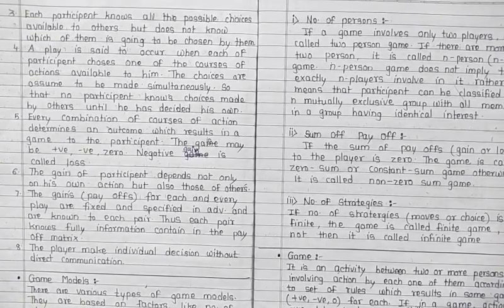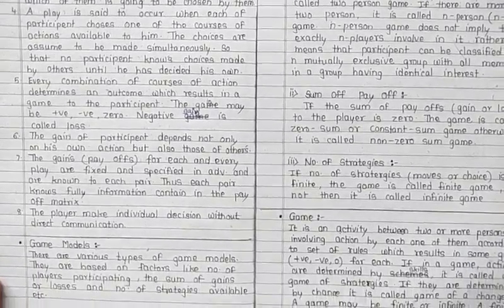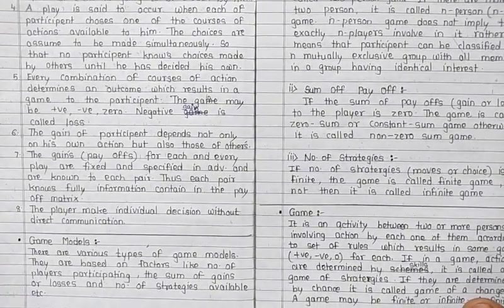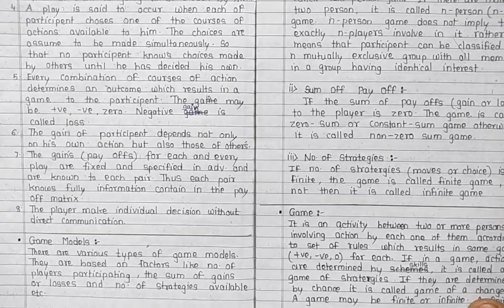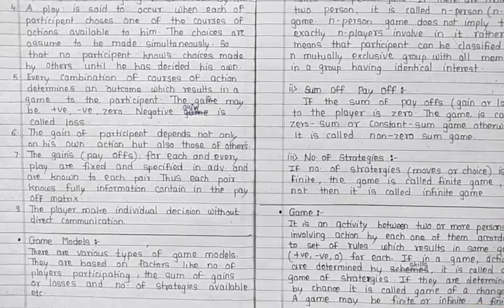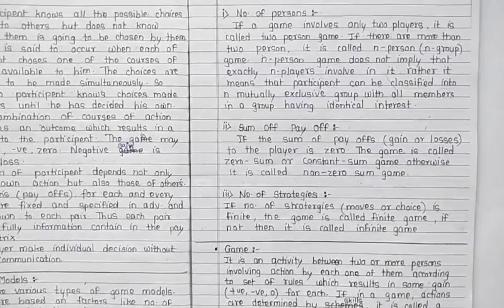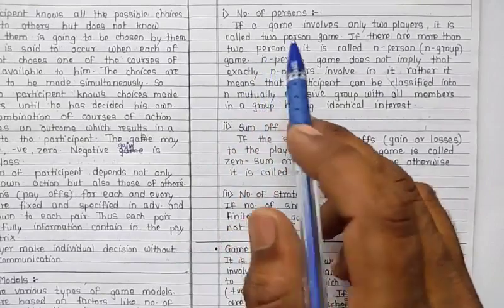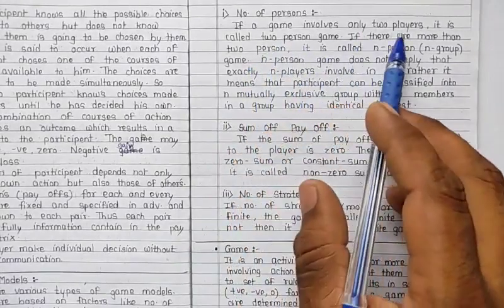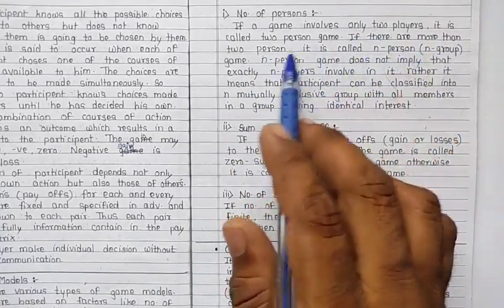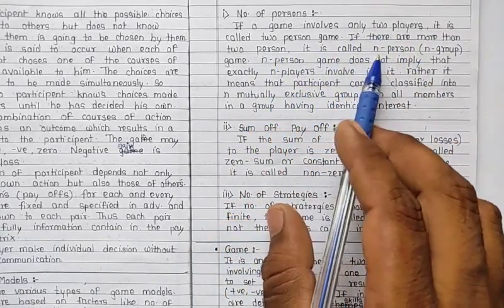Now we'll see the game model. There are various types of game models based on factors like number of players participating, the sum of gains or losses, and number of strategies available. Regarding number of persons: if a game involves only two players, it is called a two-person game; if there are more than two persons, it is called an n-person game.